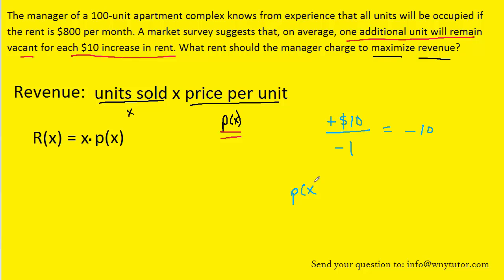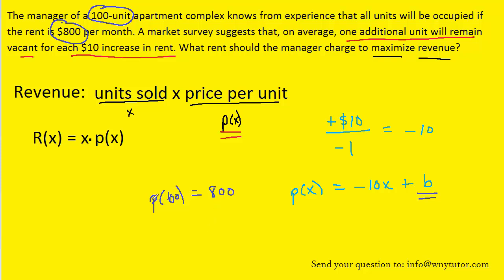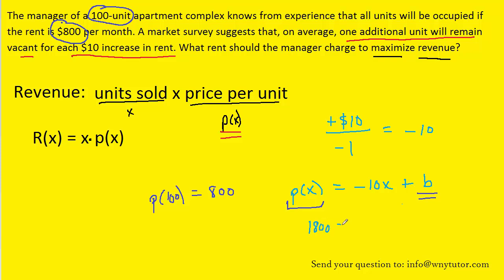We can write p(x) as a linear function with slope negative 10 and y-intercept b. Our next challenge is to find b. We know that the price is $800 when all 100 units are being used, so p(100) = 800. Filling in x = 100 and multiplying negative 10 by 100, then adding 1,000 to both sides, we find that b = 1,800.